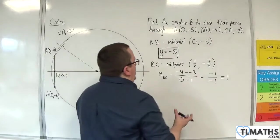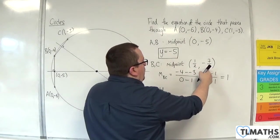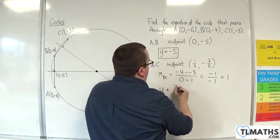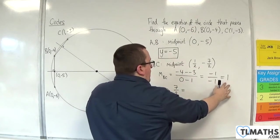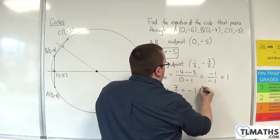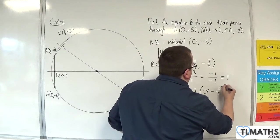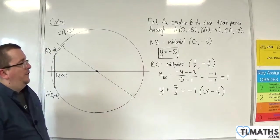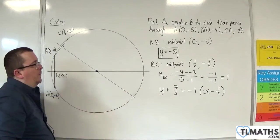So the perpendicular bisector will be y take away y₁, so plus 7/2, is equal to the gradient, which is -1, times x take away x₁, so x take away 1/2. So this is the equation of the perpendicular bisector, so that line there.